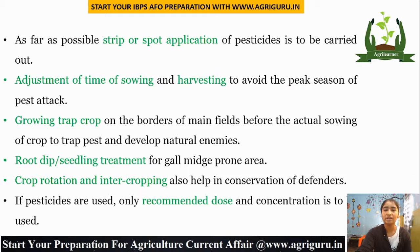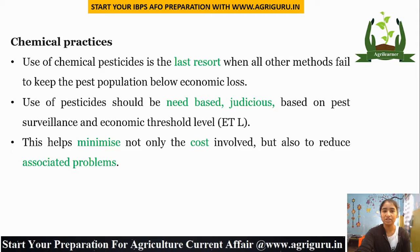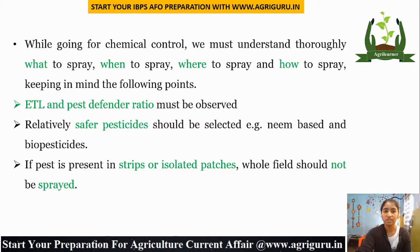Chemical Practices is the last resort when all other methods fail to keep the pest population below economic loss. Use of pesticides should be need-based, judicious, and based on pest surveillance and economic threshold level. This helps minimize the cost involved and reduces associated problems. While going for chemical control, we must understand thoroughly what to spray, when to spray, where to spray, and how to spray — keeping in mind the ETL and pest-defender ratio.